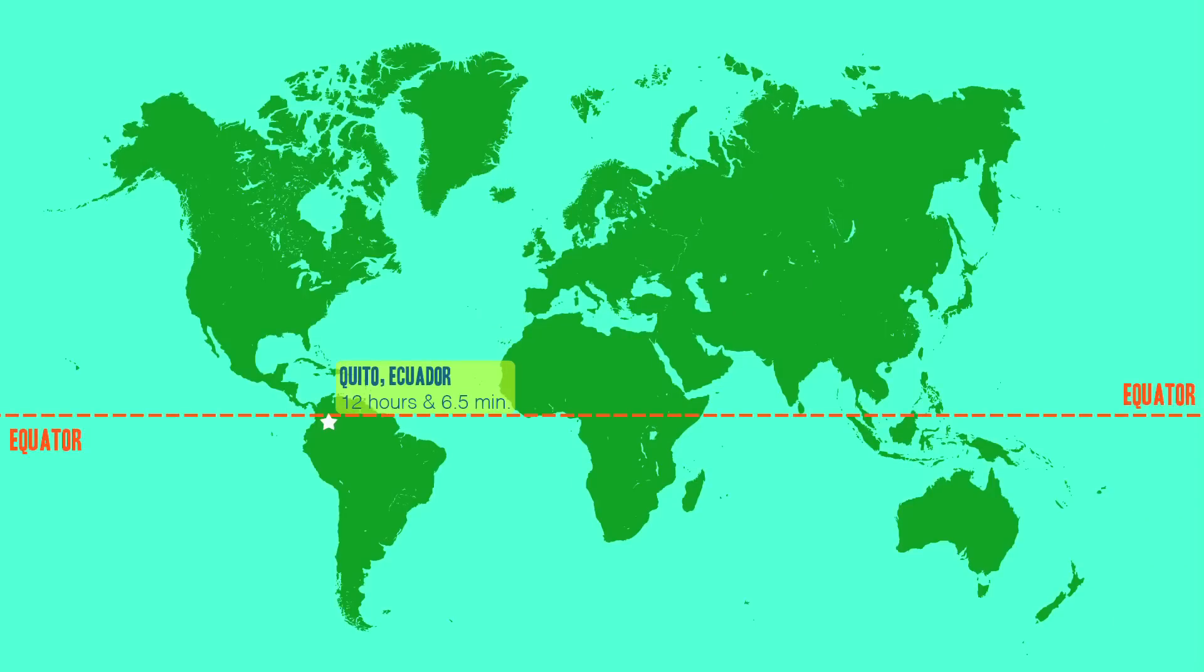For example, in Quito, Ecuador, just below the equator, the length of the equinox day is about 12 hours and 6.5 minutes. In Shanghai, at 30 degrees north latitude, it's 12 hours and 8 minutes. And in St. Petersburg, Russia, at 60 degrees north latitude, it's 12 hours and 16 minutes.